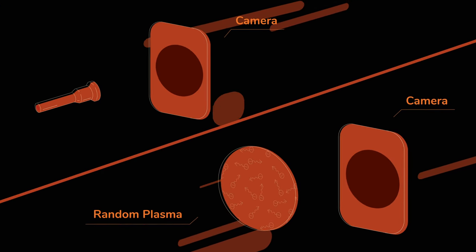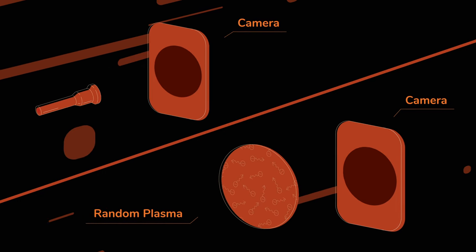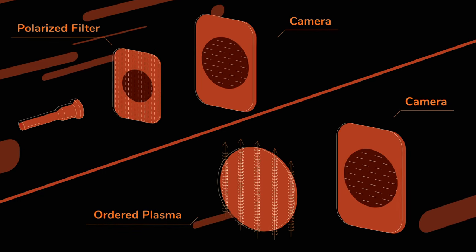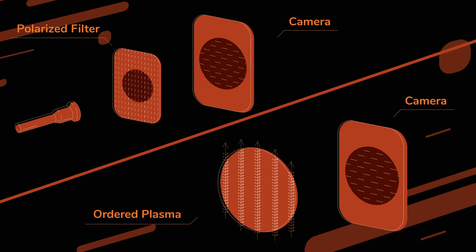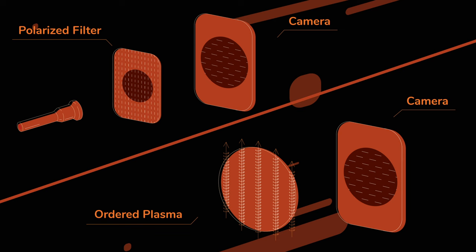In space, randomly moving hot gas or plasma emits unpolarized light, like the torch. Plasma threaded by a magnetic field is ordered and the emitted light is polarized. The magnetic field acts as a polarized filter.